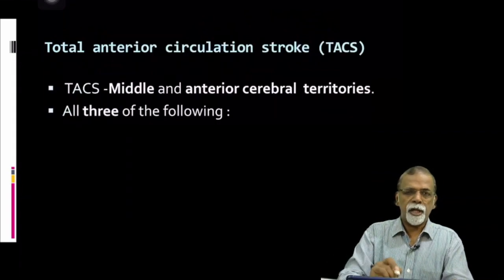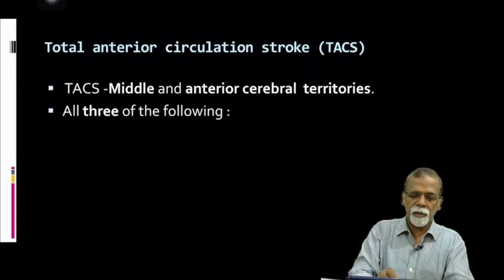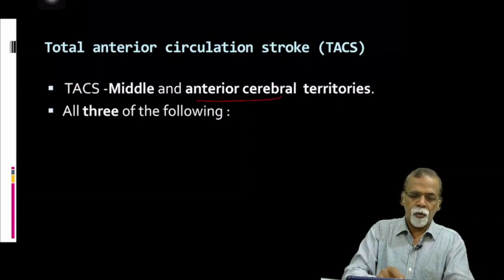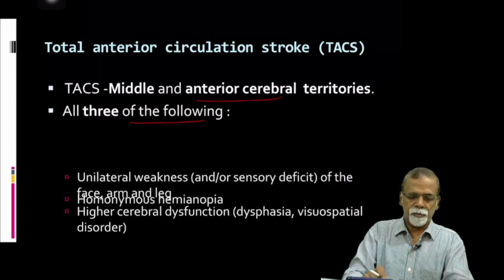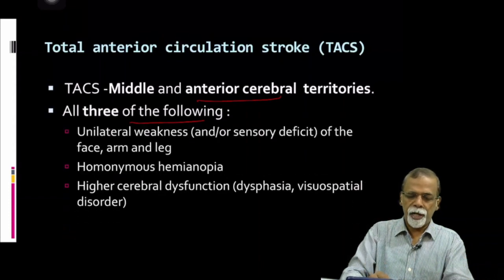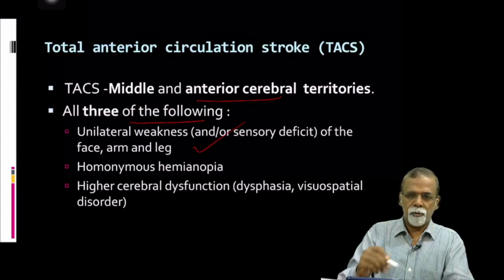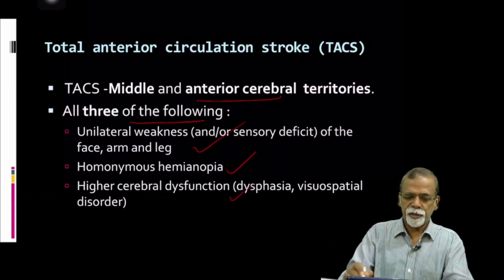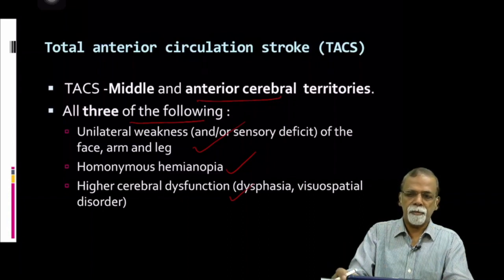In summary, total anterior circulation stroke involves the middle cerebral and anterior cerebral arteries, with all three of the following: unilateral weakness affecting both arm and leg, homonymous hemianopia, and cortical dysfunction in the form of dysphasia and other higher order functions.